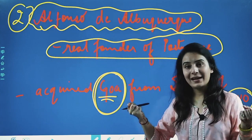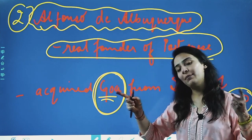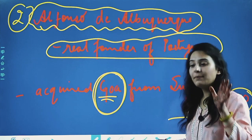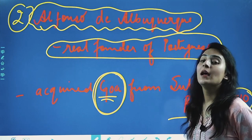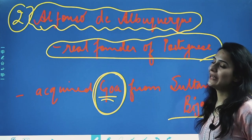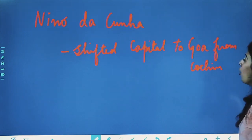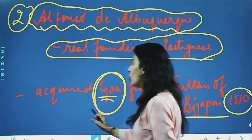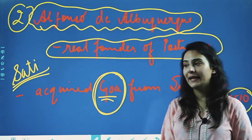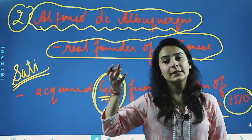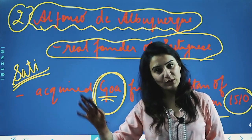So to summarize: Vasco de Gama came only for trade and attracted many people. Pedro Alvarez Cabral established the factory at Calicut. Then Vasco de Gama established the factory at Canonor. The first governor was Francisco de Alameda. And finally Alfonso de Albuquerque is recognized as the real founder of Portuguese power in India. He acquired Goa from the Sultan of Bijapur. The abolition of sati was also done by him.